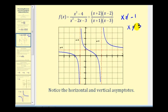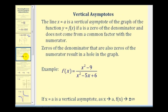The line x equals a is a vertical asymptote of the graph of the function if a is a zero of the denominator and does not come from a common factor with the numerator. Zeros of the denominator that are also zeros of the numerator result in a hole in the graph, not a vertical asymptote.